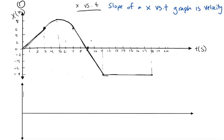Keep in mind, velocity will include a direction. The first thing I always do with a tricky position-versus-time graph — distance measured in meters, time in seconds — is split this graph into sections: different parts where it's doing different types of motion.